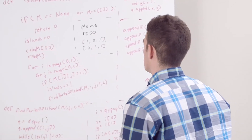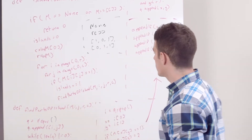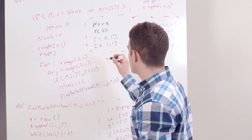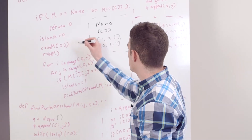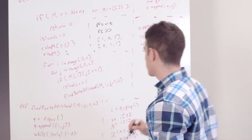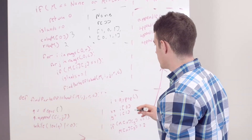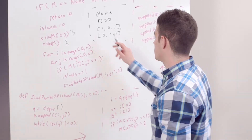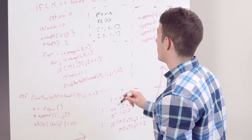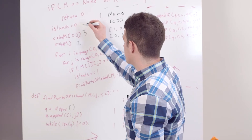I go through, set islands to zero, checking the length. So this would be set to three, and this would be two. We're going through every element. When I find my first one, I'm incrementing my island count, so now that's going to be equal to one.